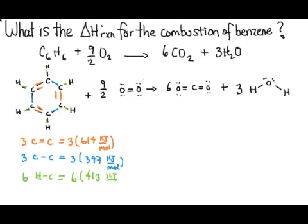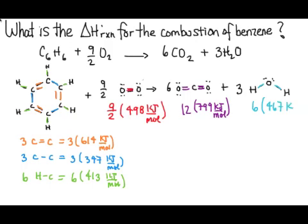Now I have six of those carbon-hydrogen bonds in green, and those are 413 kilojoules per mole. The oxygen is 498 kilojoules per mole, and there's nine halves of those as my stoichiometric coefficient. On the other side of the reaction, I have 12 carbon-oxygen double bonds. That's because I have six CO2s, and each CO2 has two of those double bonds in it.